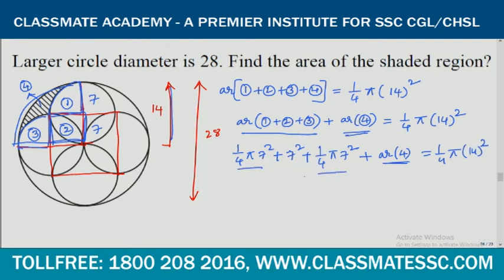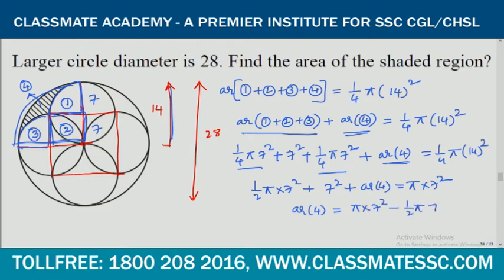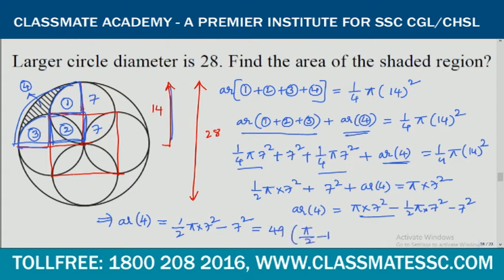Adding these together: half of π times 7 squared, plus 7 squared, plus the area of region 4 equals one fourth of π times 14 squared, which equals π times 7 squared. Therefore, the area of region 4 equals π times 7 squared minus half of π times 7 squared minus 7 squared. This simplifies to 49 times (π/2 minus 1). This is the area of the shaded region.